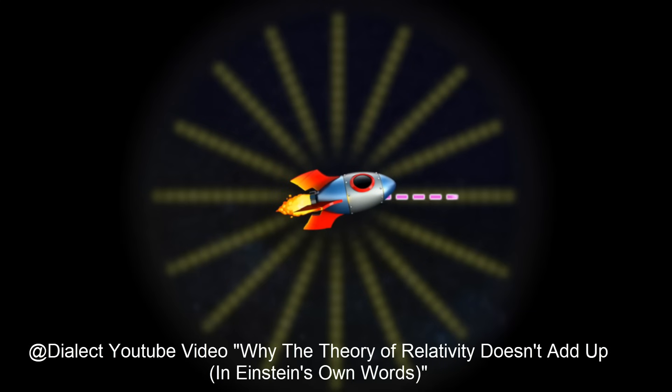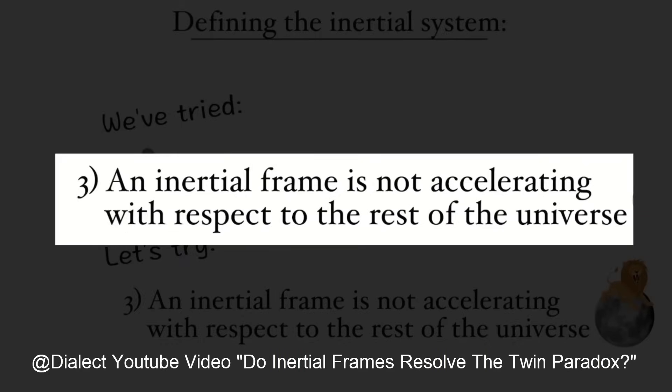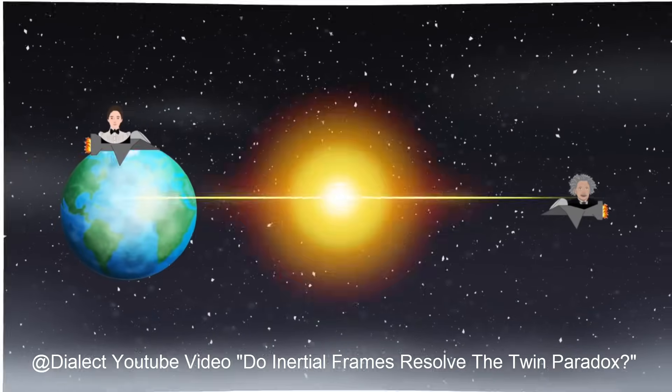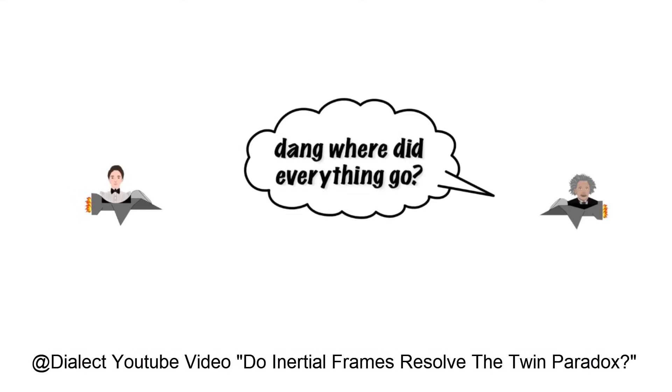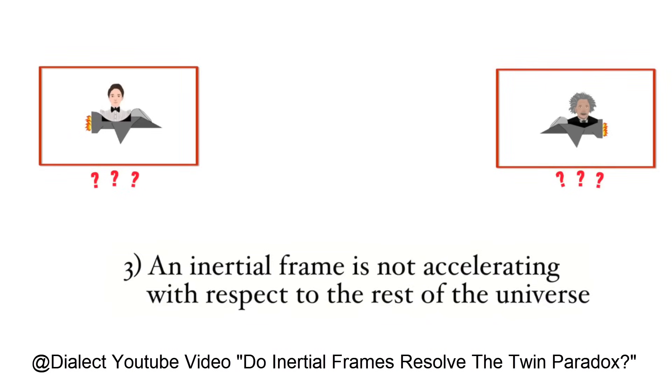Whatever you're accelerating relative to, it must be located within your immediate vicinity. But there's still a problem with this definition. Because if we formulate the twin paradox in empty space, then there will be no rest of the universe for the twins to refer to, and thus no way to determine which twin's frame is inertial. So we have to cross that definition off too.